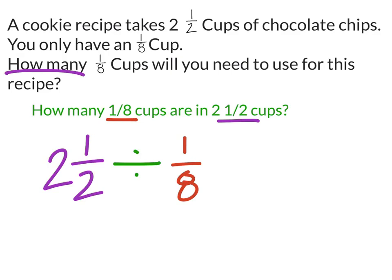Okay, so the first thing I would want to do is take this two and a half and change it into an improper fraction. So that would be two times two, which is four, and then add one the numerator, which is five. So it's really five halves divided by one eighth.